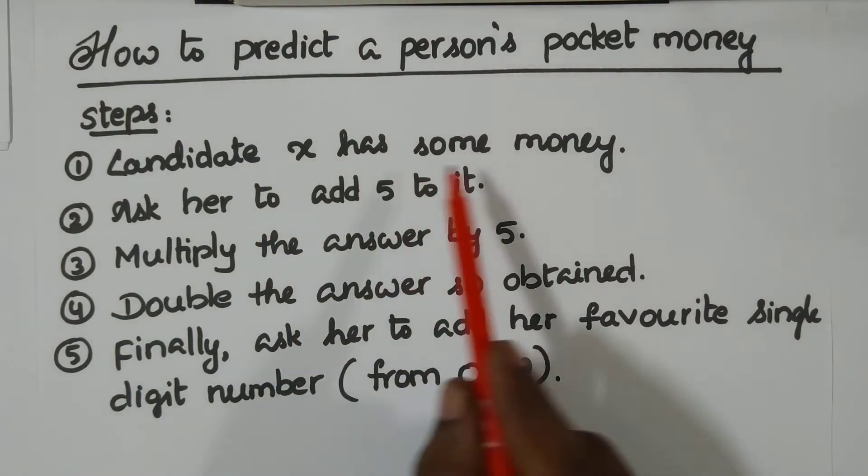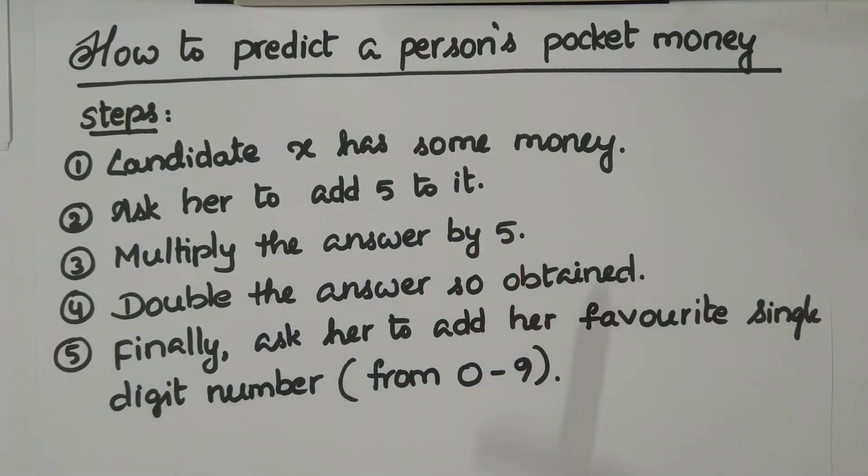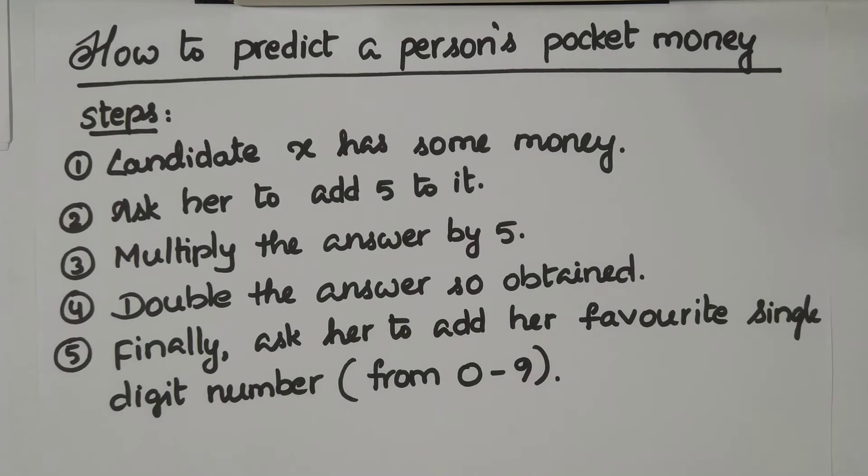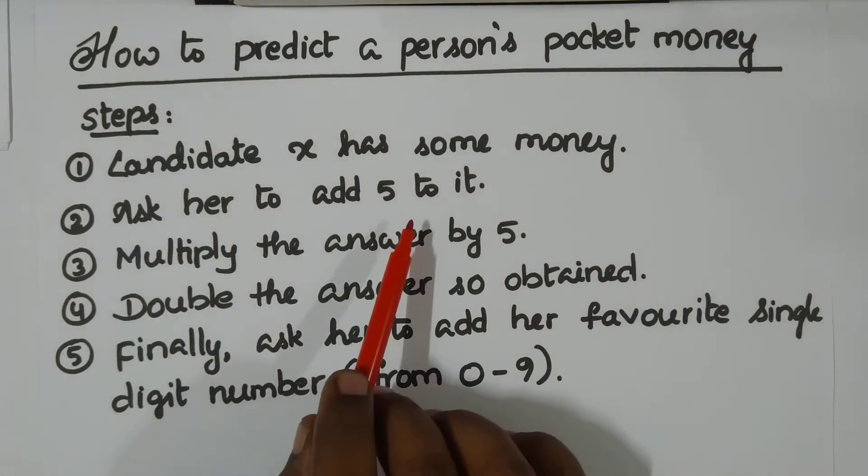Step one: he or she has some money. You will simply ask them to put their money in their mind. They don't tell it out. Mentally they will take the money, whatever they have, and then ask them to add five to it.